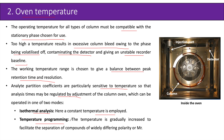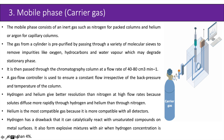The second mode is temperature programming, where the temperature is gradually increased to facilitate the separation of compounds of widely differing polarity or molecular weight. The mobile phase consists of an inert gas such as nitrogen for packed columns, or helium or argon for capillary columns. The gas from a cylinder is pre-purified by passing through a variety of molecular sieves to remove impurities like oxygen, hydrocarbons, and water vapor, which may degrade the stationary phase.